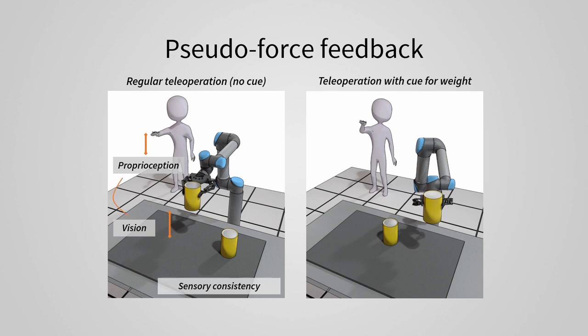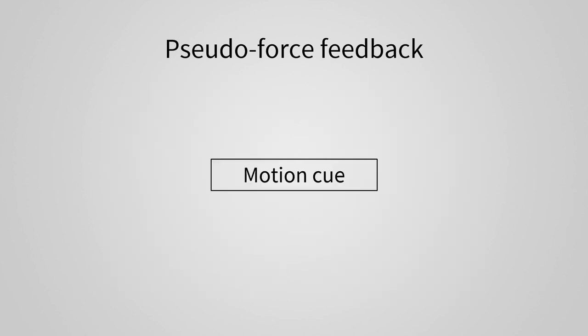During regular teleoperation, these two feedbacks are consistent. However, in the scenario where we add the cue for weight, the movement of the robot differs from the user's input, and thus we create a conflict between the information from the two senses. Through the remainder of this talk, I will refer to our cue as the motion cue, because variation in the motion of the robot causes the sensory conflicts.